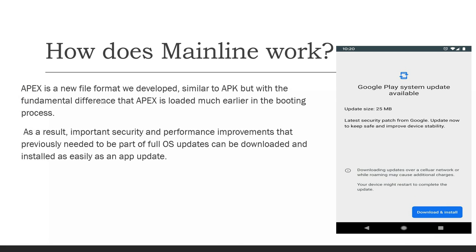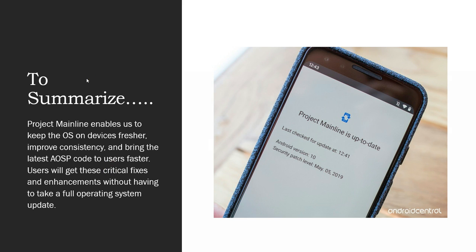APEX is a new file format Google has developed, similar to APK, but with a fundamental difference: the APEX file is loaded much earlier in the booting process. As a result, important security and performance improvements that previously needed to be part of full OS updates can now be downloaded and installed easily through an app update.